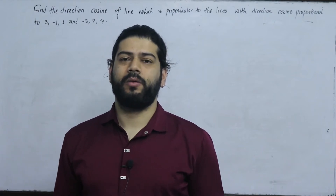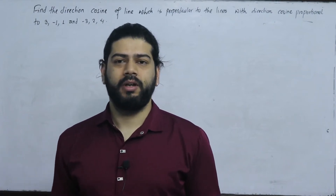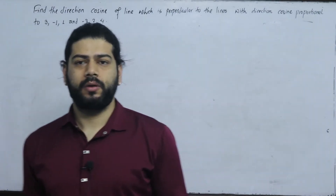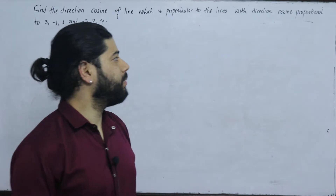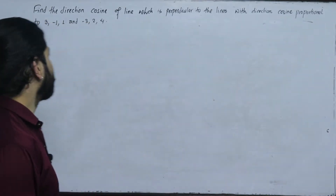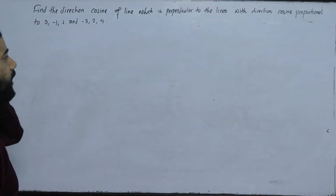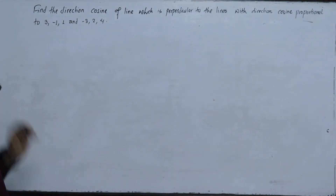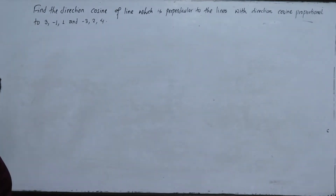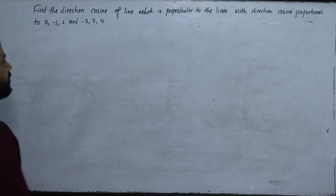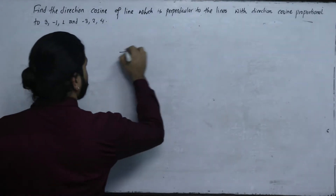In this class, we will solve a question. Find the direction cosine of a line which is perpendicular to the lines with direction cosines proportional to 2, 3, minus 1, 1 and minus 3, 2, 4.